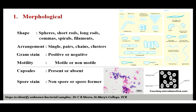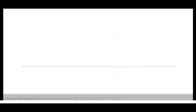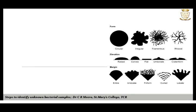Capsules are the slimy layer outside the bacteria which make them more virulent. We can also look for the presence or absence of spores. All these morphological characteristics give us some idea about the type of organism we are studying. After observing the morphological characteristics, we move to the next step: the analysis of cultural characteristics of the organism.